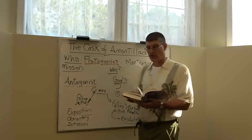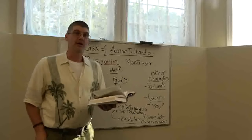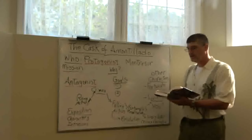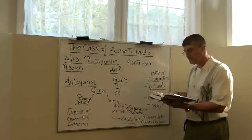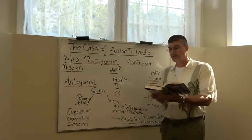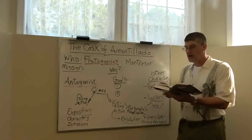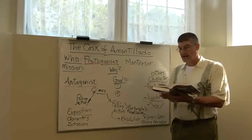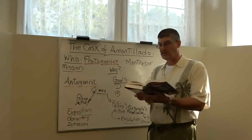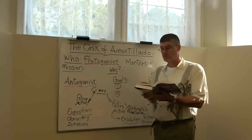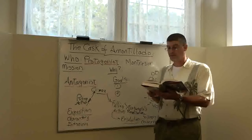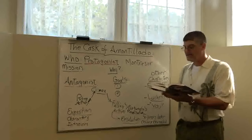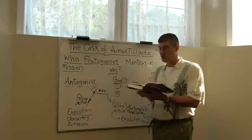I'm going to read part of the opening paragraph. This is a first-person narration — Montresor is the narrator relating how he goes about getting his revenge on Fortunato. It begins: 'The thousand injuries of Fortunato I had borne as best I could, but when he ventured upon insult, I vowed revenge. You, who so well know the nature of my soul, will not suppose, however, that I gave utterance to a threat. At length I would be avenged. This was a point definitely settled. But the very definitiveness with which it was resolved precluded the idea of risk. I must not only punish, but punish with impunity.'